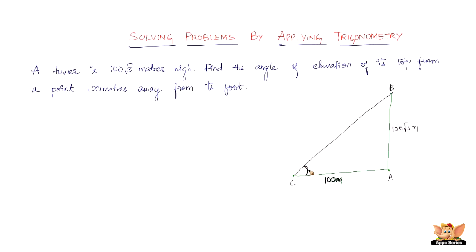This angle of elevation is called theta. This is clearly a right-angle triangle. We have AB = 100√3 meters (the height of the tower) and AC = 100 meters (the distance from the foot of the tower to point C). We need to find theta.